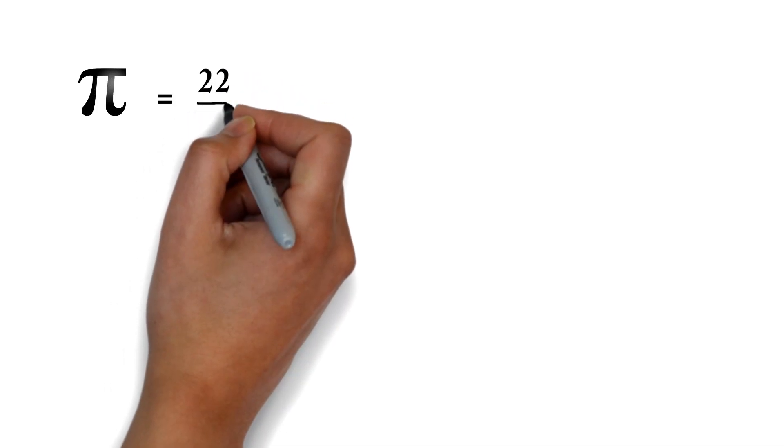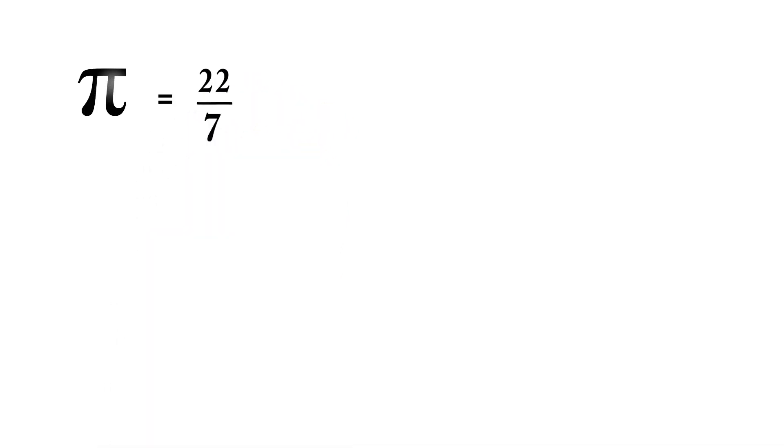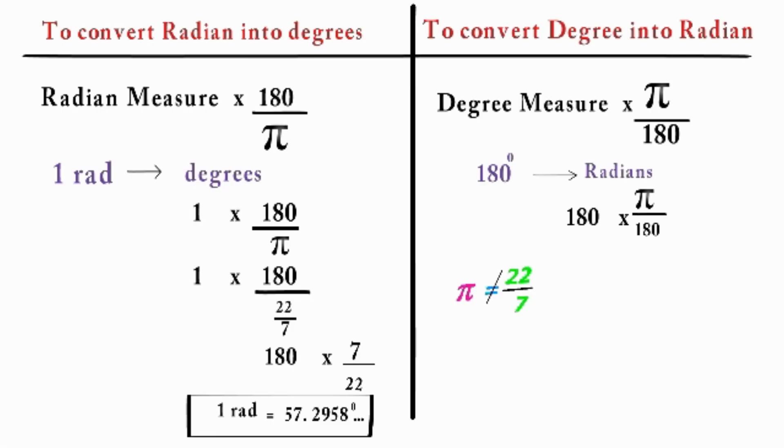Till now, we knew that π is equal to 22/7, but now you also know another value of π that is 180°. But how do you know where to use which values? Like I told you, while converting into radians, π is never 22/7.